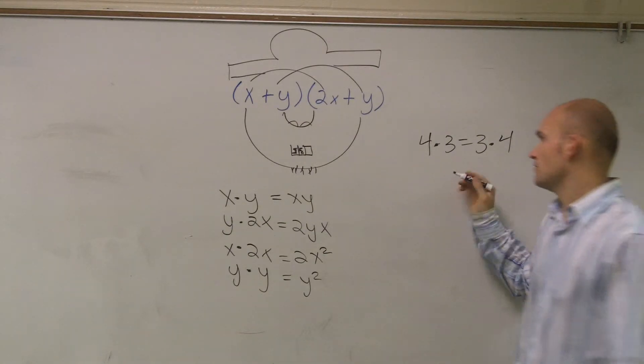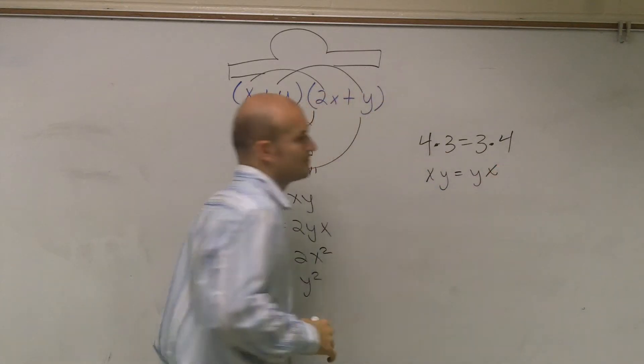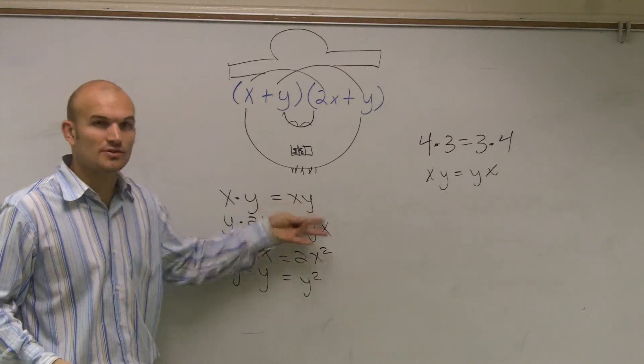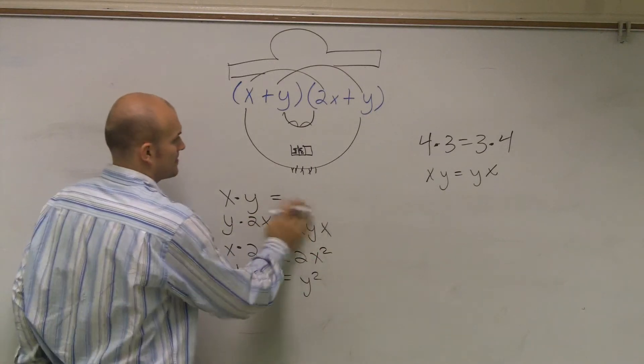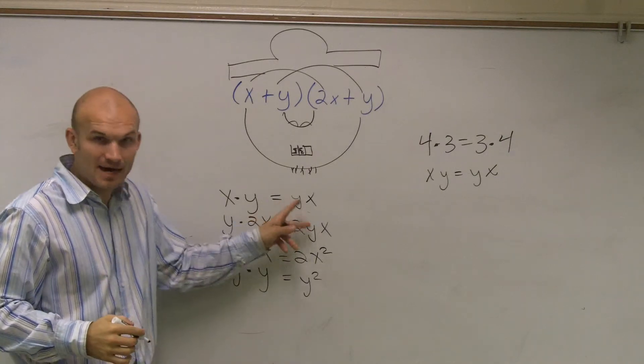It's true, right? So then I could say that x times y is equal to y times x, right? So then I guess what I'm just saying is let's rewrite this so they look exactly the same. Okay? Because then, can I combine these now?